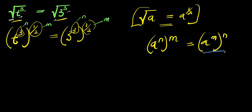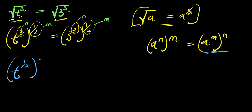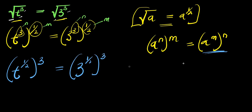By applying this identity, the exponent n comes inside the bracket. So we are going to have t to the power of one over two, raised to the power of three, equals three to the power of one over two, raised to the power of three.